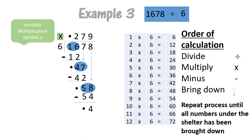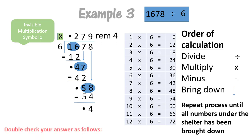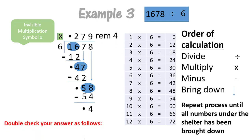So four will become our remainder. Now we can double check our answer: we're going to say 279 times six, that will give us 1674. And then we add our remainder of four, and it will give us a total of 1678.